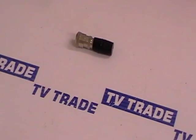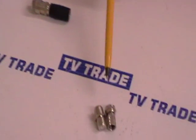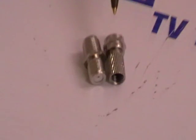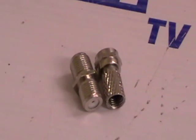We'll move on then to the F type connector which we have displayed here. What we have here is an F type connector itself and an F type joiner.